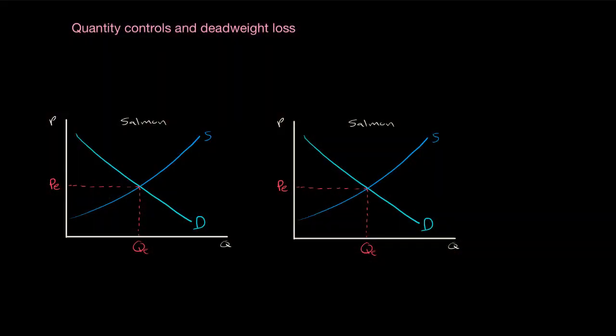We've been studying different ways that governments intervene in the markets for goods and services. In this video we're going to talk about a different type of government intervention, not price controls, not excise taxes, rather something we call quantity controls. Now there's another word for quantity controls. These are sometimes and often referred to as quotas. A quota is a physical limit placed by the government on the total legal amount of output to be produced in a market.